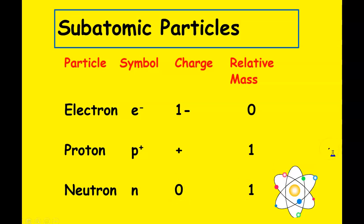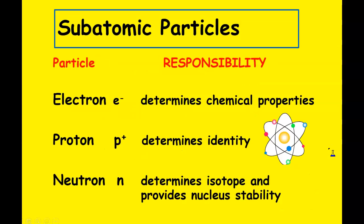You need to know the responsibilities of each particle. The electron's responsibility is that it determines the chemical properties. The proton determines the identity of the atom — it tells you which element it is. The neutron tells you the isotope and provides nuclear stability.